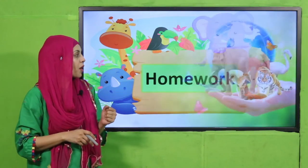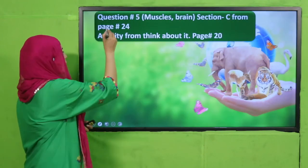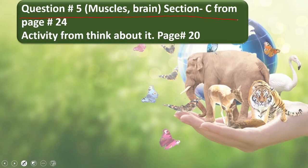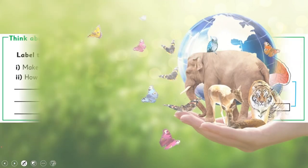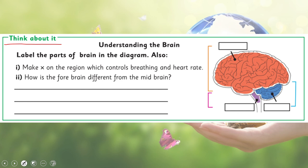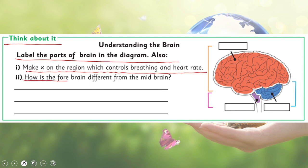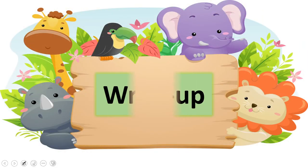For homework, do question number five on muscles and brain from section C, page number 24. Also do the activity from 'Think About It' on page number 20: label the parts of the brain in the diagram, mark an X on the region that controls breathing and heart rate, and answer how the forebrain is different from the midbrain.